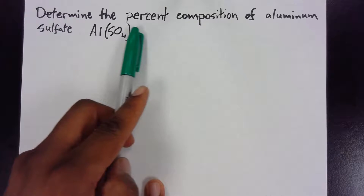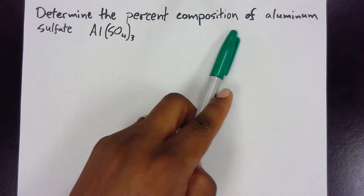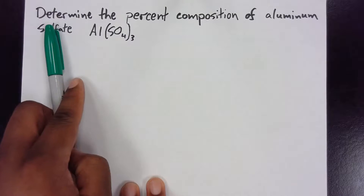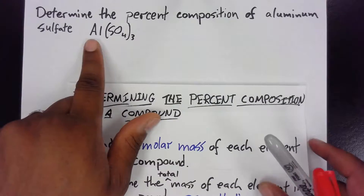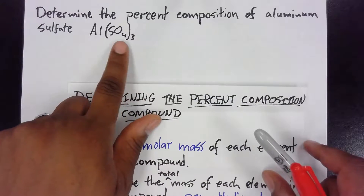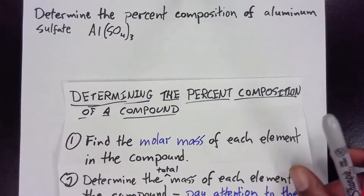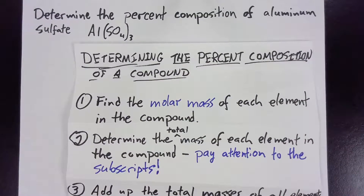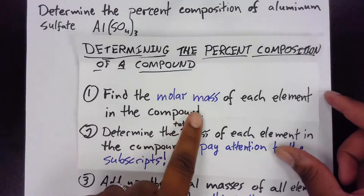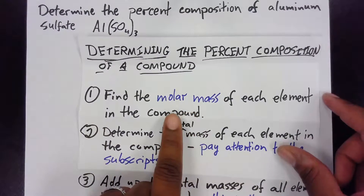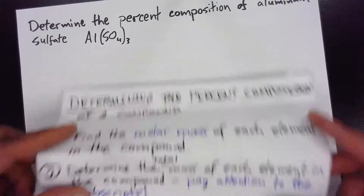Let's determine the percent composition of aluminum sulfate — that is, getting the percent of each element inside of this compound. I've put together a couple of simple steps to guide us through it. First, we're going to find the molar mass of each element in the compound, so let's go ahead and do that first.